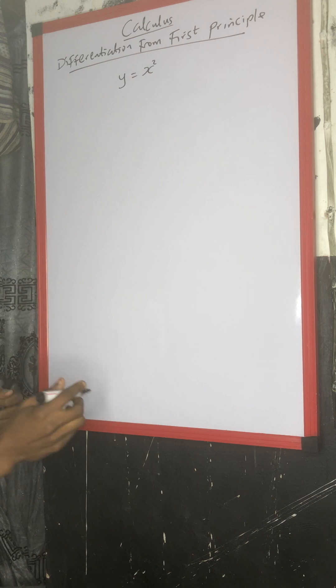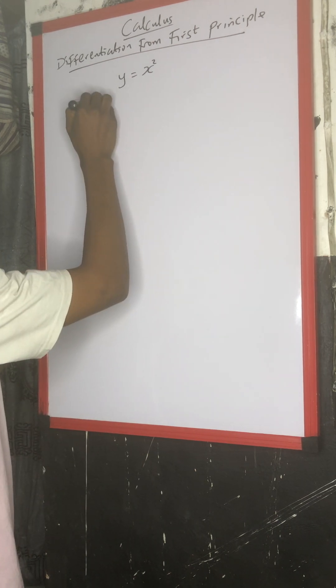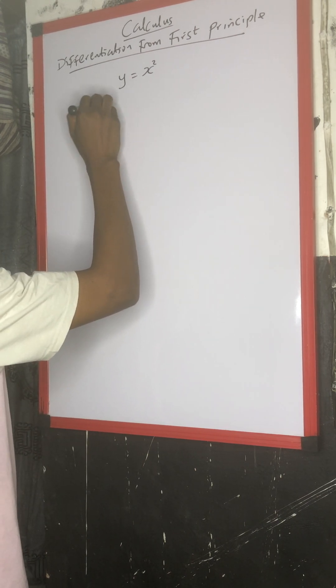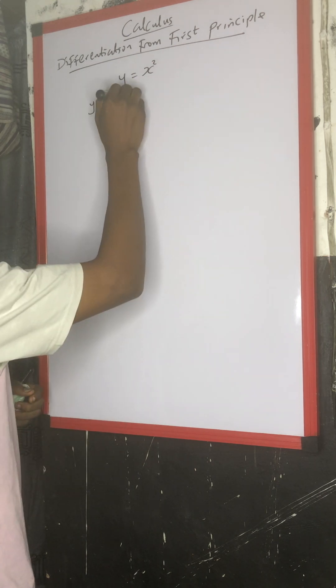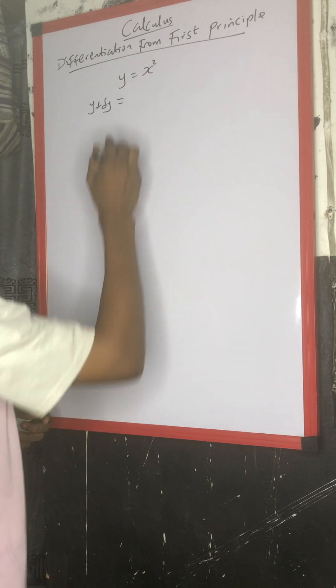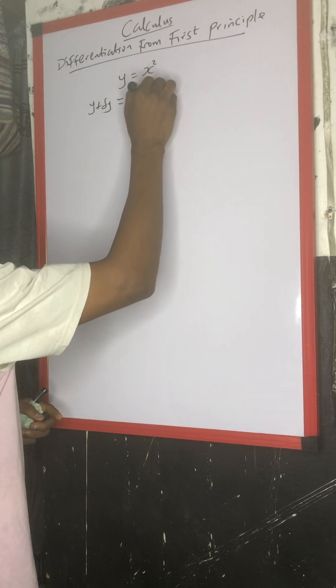Now, like I said earlier, whenever you differentiate a variable, you have that variable plus change of that variable. Then equals to, as there is a variable, then you have s plus change in x.